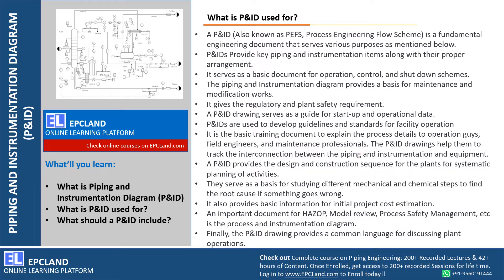P&IDs can be used as a base document to explain the plant to somebody, for training purposes. P&IDs provide the design and construction sequence for systematic planning of activities — this becomes a base document during both the design and construction phases. They also serve as a basis for studying different mechanical and chemical steps to find the root cause if something goes wrong — since piping, instrumentation, and equipment are all shown with their sequence and connections.